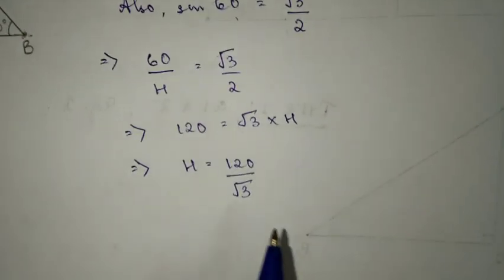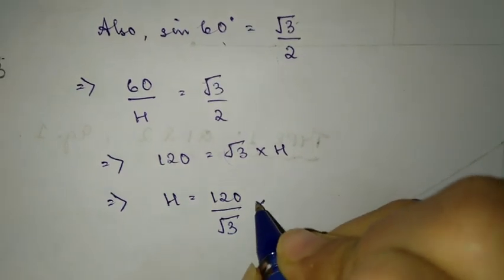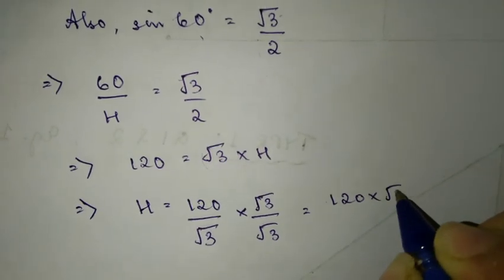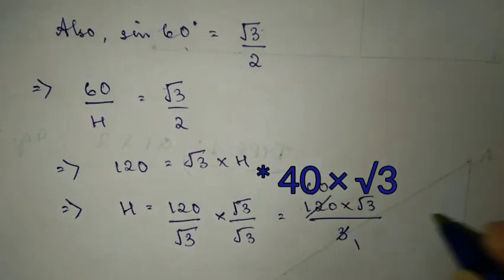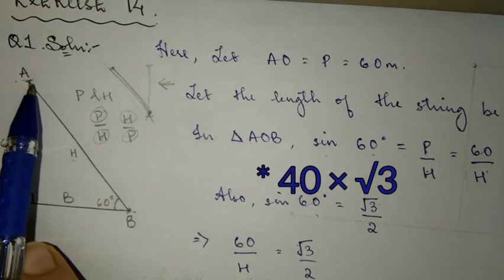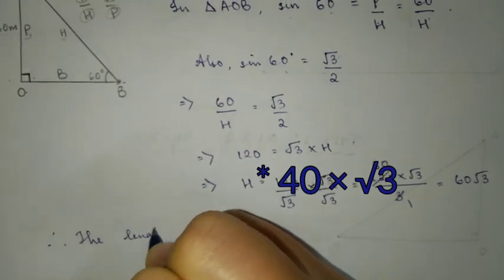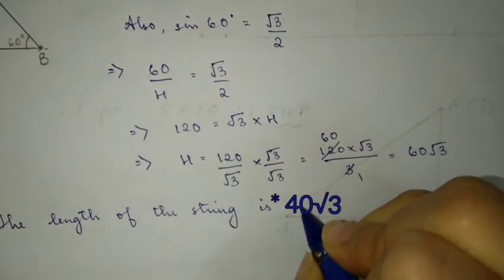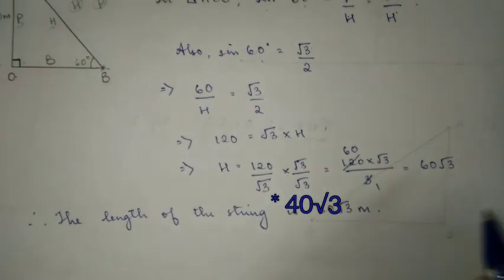You should never leave an answer with a root in the denominator, so we're going to rationalize this. We multiply both numerator and denominator by root 3: 120 into root 3 over root 3 into root 3 equals 120 root 3 over 3, which equals 40 root 3. So the hypotenuse is 40 root 3. Therefore, the length of the string is equal to 40 root 3 meters. Please don't forget to write the unit.